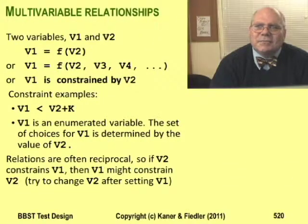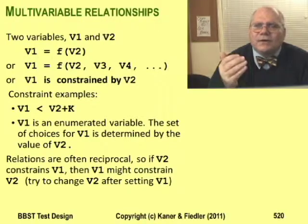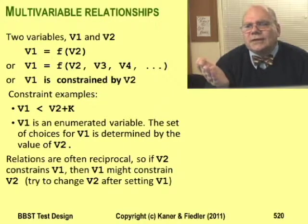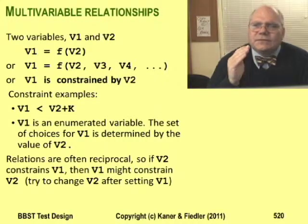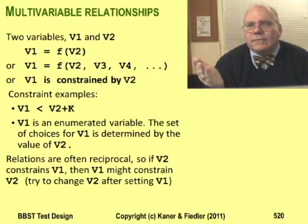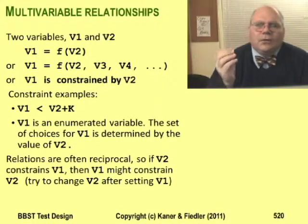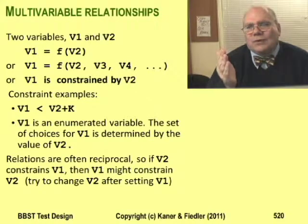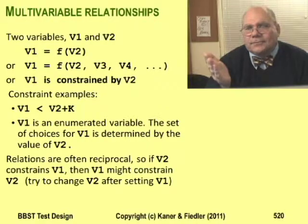The final column captures the nature of the relationship. In our case, variable 1 has to be less than variable 2 — that's an example of a constraint. Variables can be related in many ways: one variable can be a function of another, like variable 1 is 3 times variable 2; or variable 1 can be a function of several variables together including variable 2; or variable 1 can be constrained by variable 2, like variable 1 is less than variable 2. There are several types of constraints.